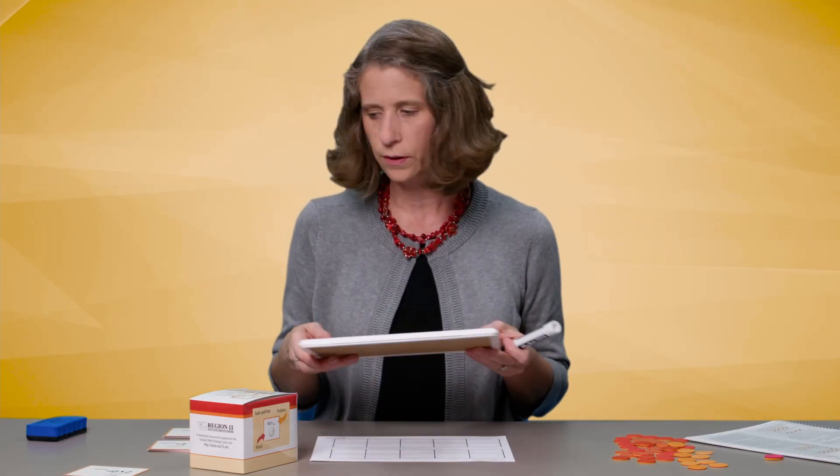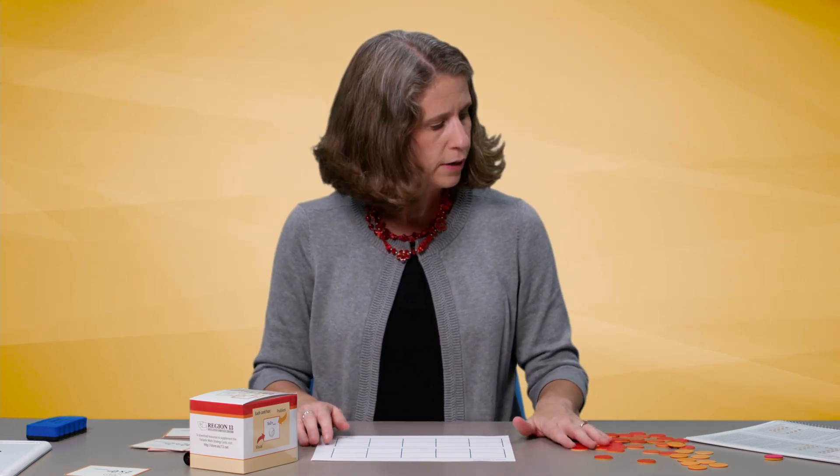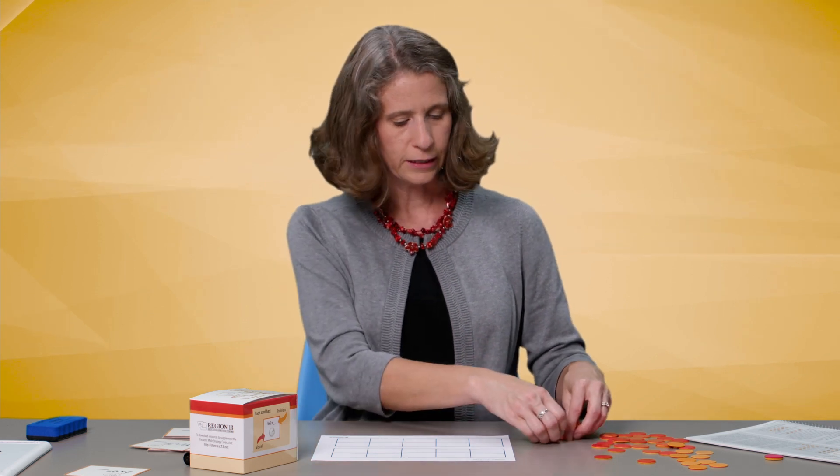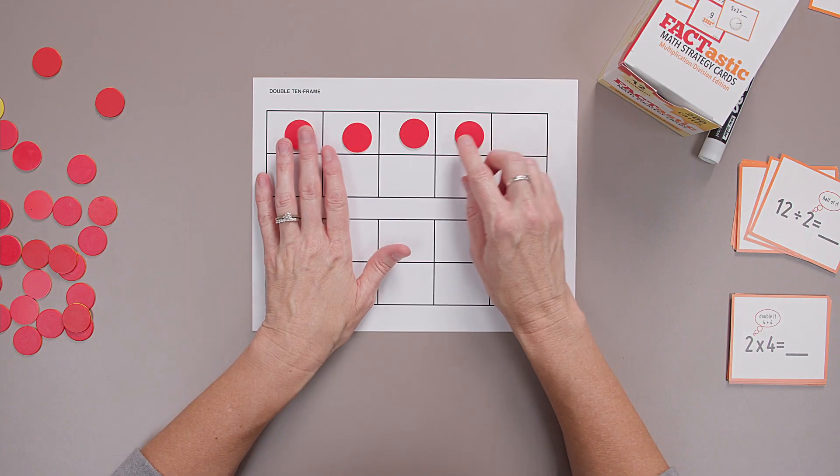Excellent! We've warmed up our brains with our twos skip counting. Let's get to our 10-frames and counters. I want us to think about what does it mean to multiply by the number two? Well, it means we're going to take that number and we're going to double it.